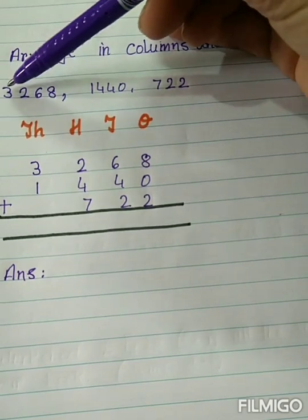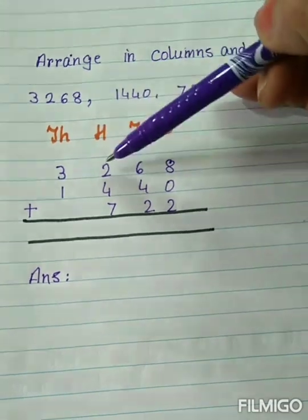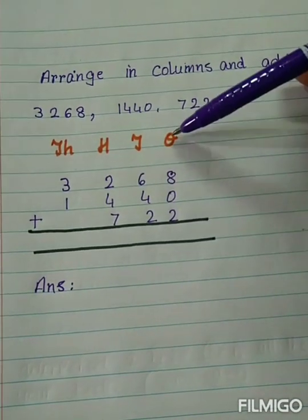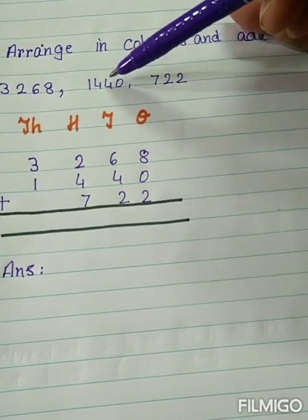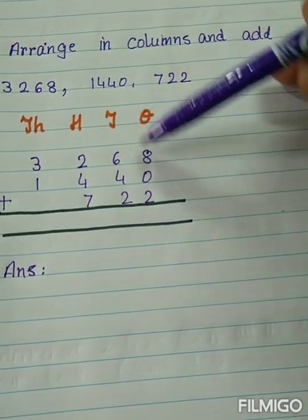Now, 3268 has been arranged as 3 thousands, 2 hundreds, 6 tens, 8 ones. 1440 has been arranged as 1 thousand, 4 hundreds, 4 tens, 0 ones.